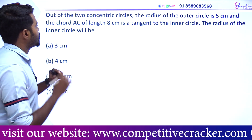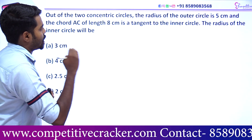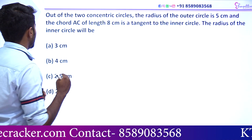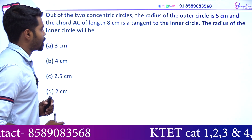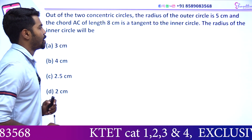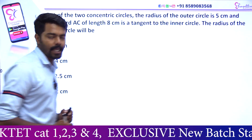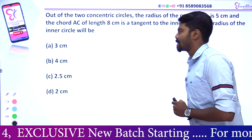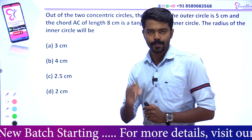Out of the two concentric circles, the radius of the outer circle is 5cm and the chord AC of length 8cm is a tangent to the inner circle. The radius of the inner circle will be: option A — 3, option B — 4, option C — 2.5, option D — 2.